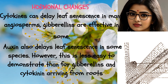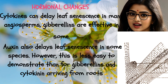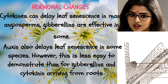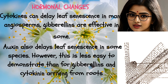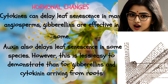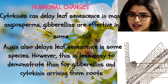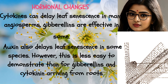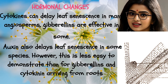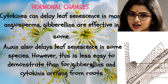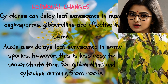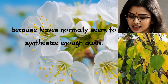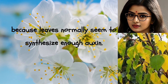Hormonal Changes. Cytokinins can delay leaf senescence in many angiosperms; gibberellins are effective in some. Auxin also delays leaf senescence in some species. However, this is less easy to demonstrate than for gibberellins and cytokinins arriving from roots, because leaves normally seem to synthesize enough auxin.